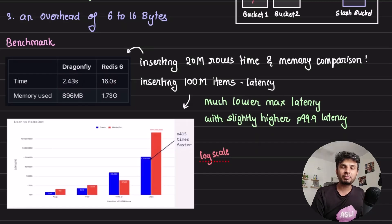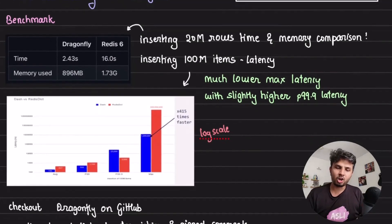The memory consumption of Dragonfly was just 896 MB while Redis was 1.73 GB. You see the stark difference. And if you observe at the log scale, this graph is plotted at log scale.